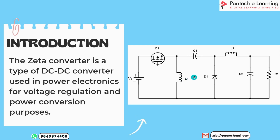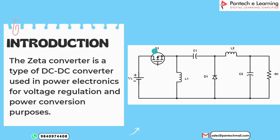The value of inductors and capacitors determines output efficiency and also the ripple voltage. For variation in the output voltage value, this converter exchanges energy between the inductors and the capacitors. Here one MOSFET is used, and this MOSFET controls the transfer of energy between the inductors and capacitors.